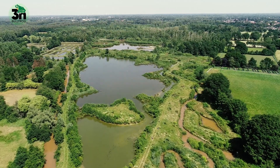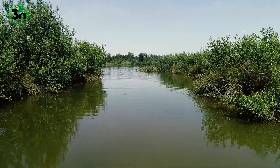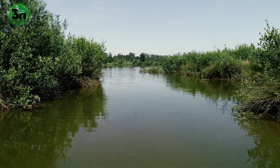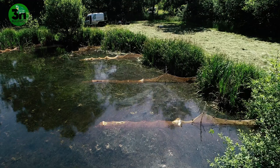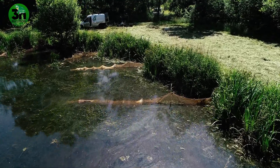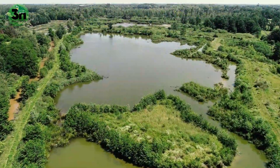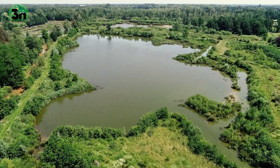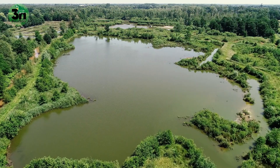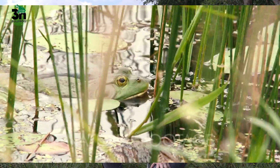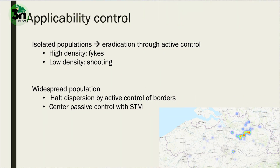The problem with invasive aquatic species is that they are often present in inaccessible habitat. When you have isolated populations, you can easily control them with active control techniques like fykes, which we use in the control of the American bullfrog. But in large valley systems with inaccessible habitat such as brooks, marshes and ponds that you can't reach, it is important to use other techniques. Often they use passive techniques combined with active techniques to enhance the efficiency of the catching.